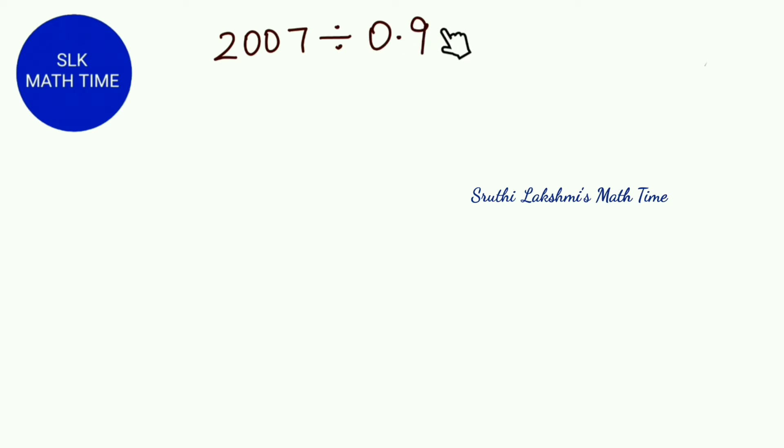So to make 0.9 as a whole number, we have to move the decimal point to the right. We have to move it until 0.9 becomes a whole number. So let's move one space. When we move the decimal point one space, we get nine.